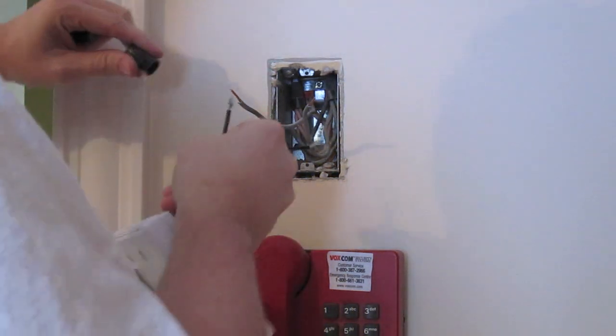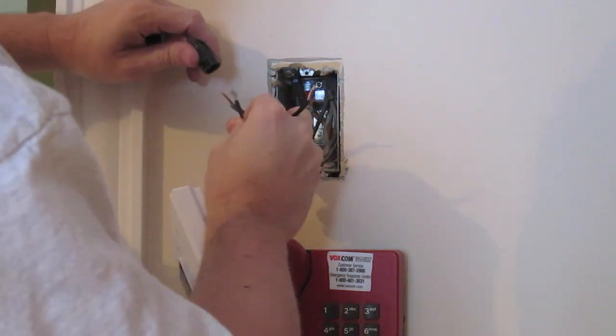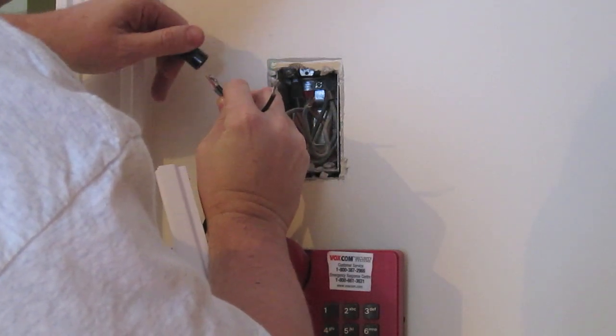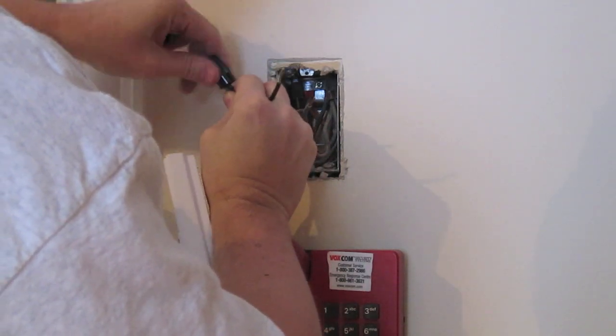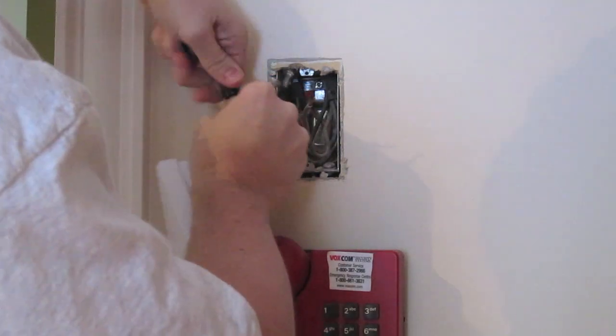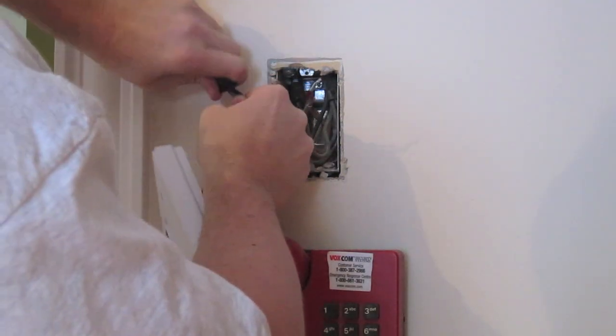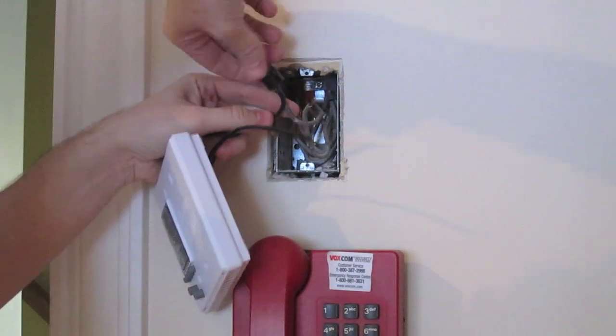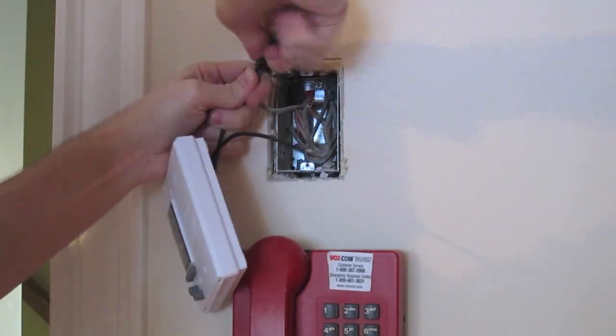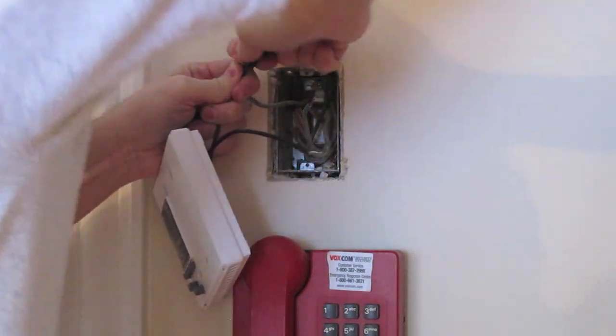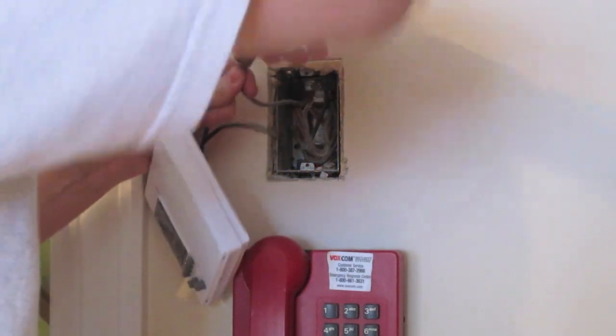So, we've already tested. The breakers have been shut off. I tested it with the meter. We have no power going to this. Put the marats back on. I'm going to get these on nice and tight. Make sure to make a good mechanical and electrical connection.